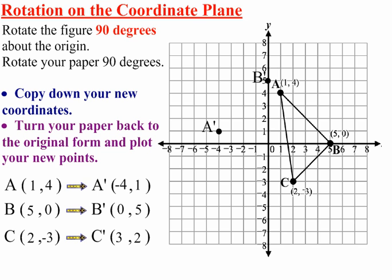And C prime is 3, 2. 3 over to the right and 2 up, and that's exactly where C prime is. Once you get that,